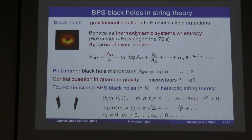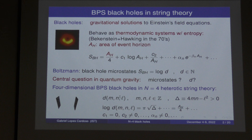This is going to be a talk about BPS black holes in four dimensions in asymptotically flat spacetime. It's well known that black holes behave like thermodynamic systems — they have an entropy, which to leading order is given by the area law of Bekenstein and Hawking, where A denotes the area of the event horizon. There may also be all kinds of subleading corrections: a logarithmic area subleading correction, power-law subleading corrections, exponentially subleading corrections, and so forth.